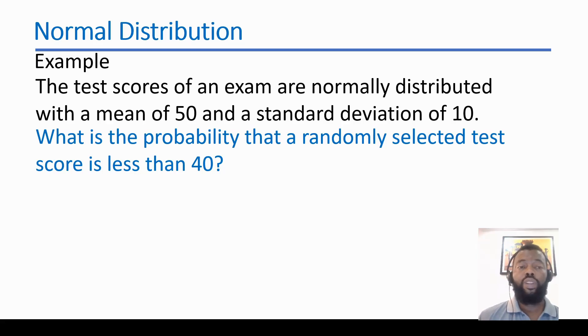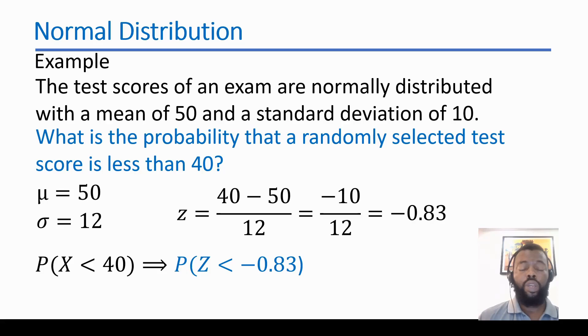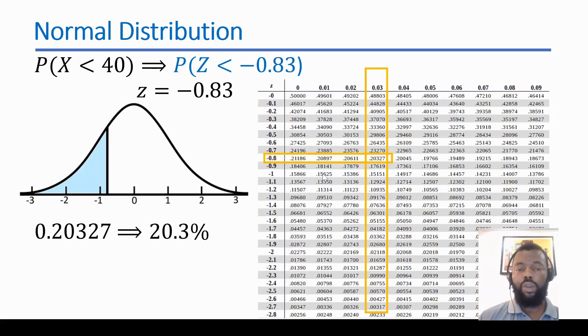Here we have an example that can help us understand the different cases. The test scores of an exam are normally distributed with a mean of 50 and a standard deviation of 10. What is the probability that a randomly selected test score is less than 40? Here we have our mean and standard deviation. We apply to the formula and we get Z equals negative 0.83. Let's go to the normal distribution table and here we can find this probability and this area corresponds to 20.3%.